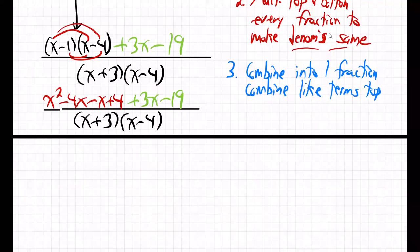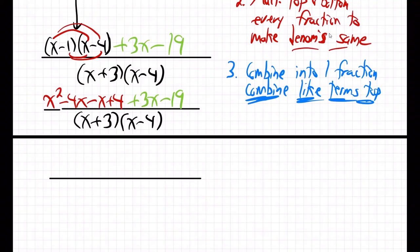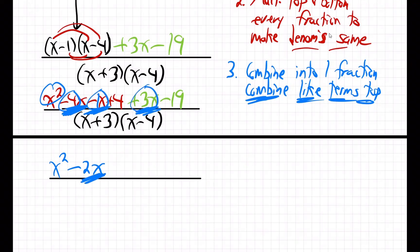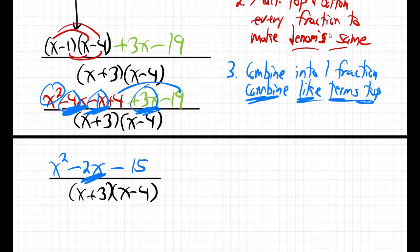Now combine like terms in the top. X squared first. Then the x terms: negative 4x minus 1x plus 3x — think of it like money: lose 4, lose 1, gain back 3, you're down 2 — so that's minus 2x. And the constants: 4 minus 19 is minus 15. So the numerator becomes x squared minus 2x minus 15, over (x + 3)(x - 4).